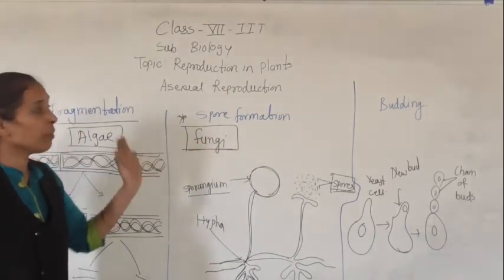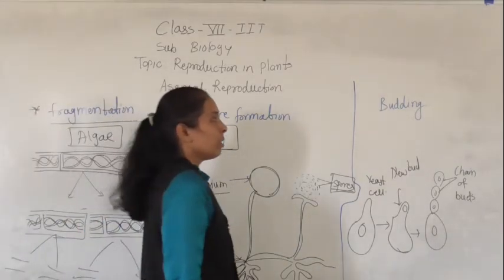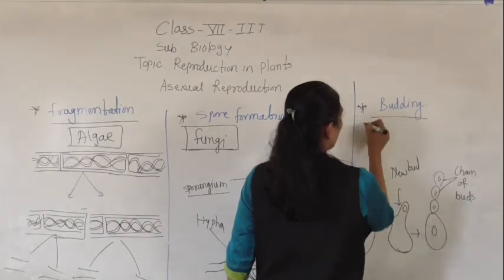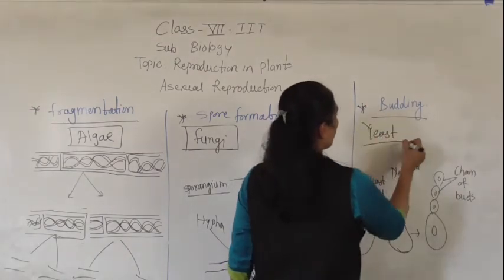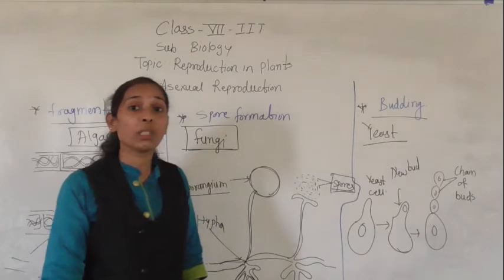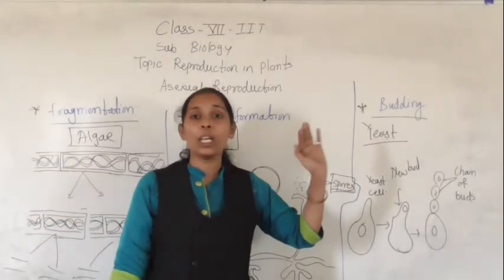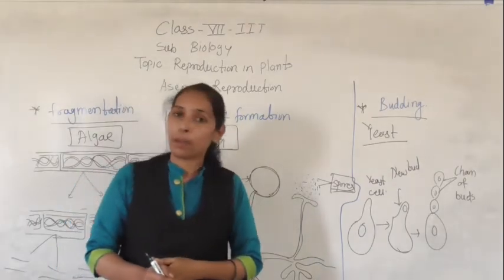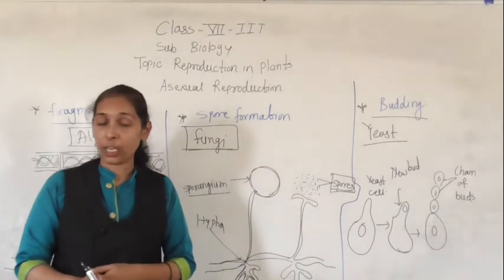Now we will move to the next type of asexual reproduction — budding, which is shown by yeast. What is meant by yeast? Yeast is a single-cell fungi that we use in bakery products.